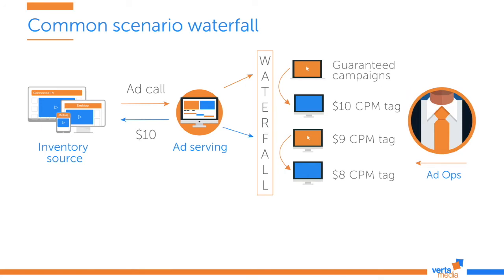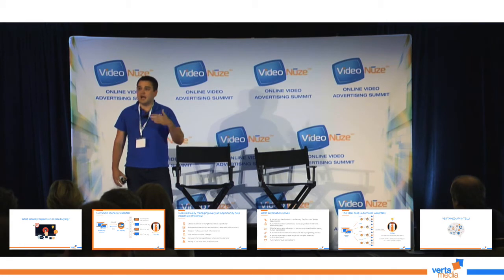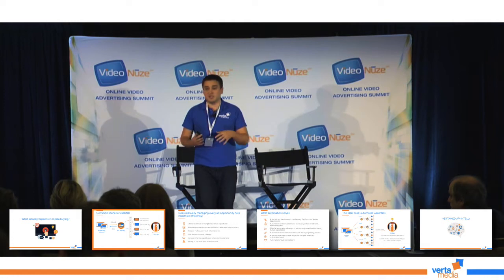When AdOps starts to create a waterfall, he puts guaranteed campaigns at the very top. Then, to fulfill inventory, he usually doesn't have enough demand, so to maintain fill rate and continue serving ads day to day, he starts to add more ad tags — starting from high-paying tags to low-paying tags.